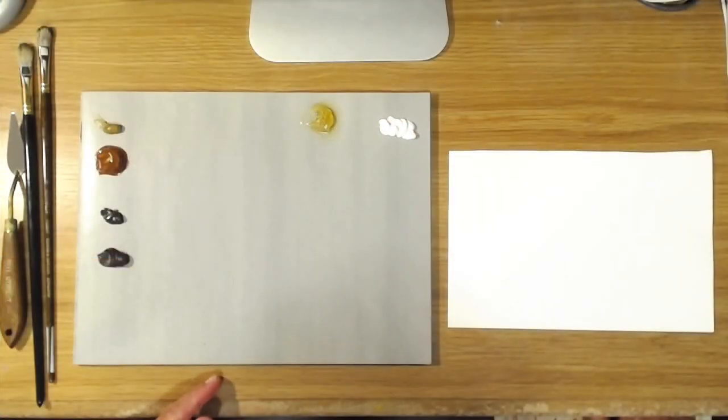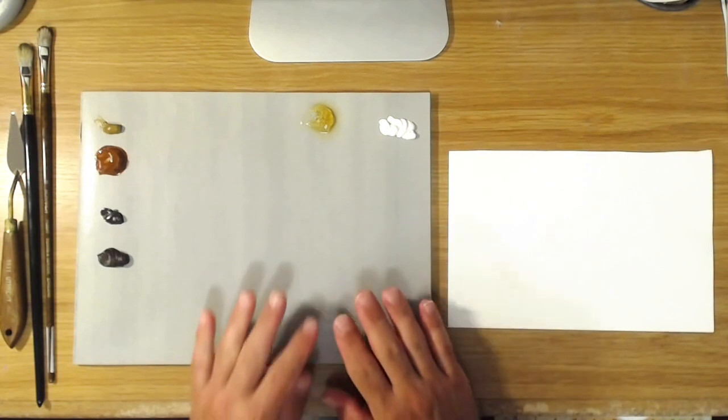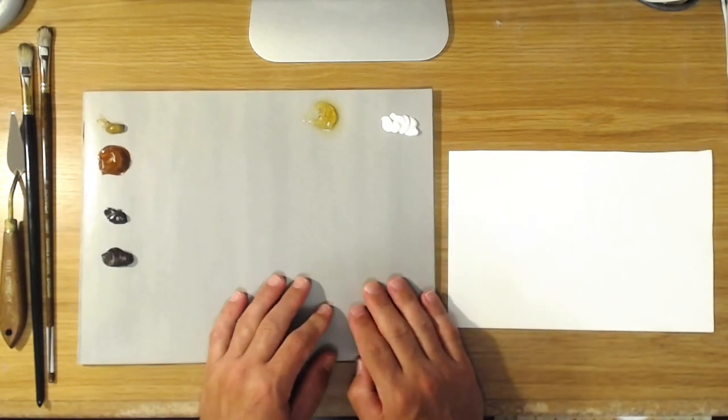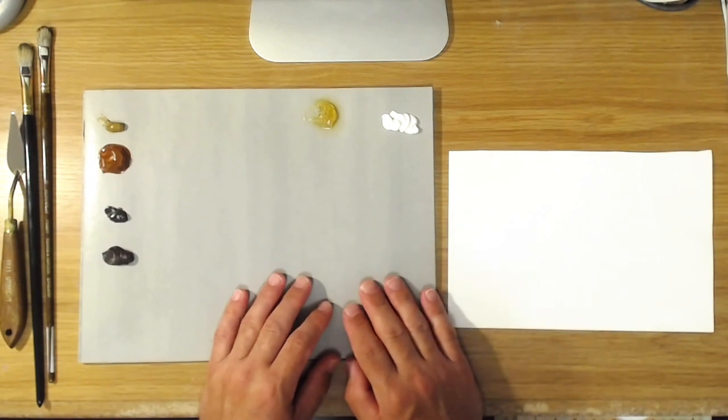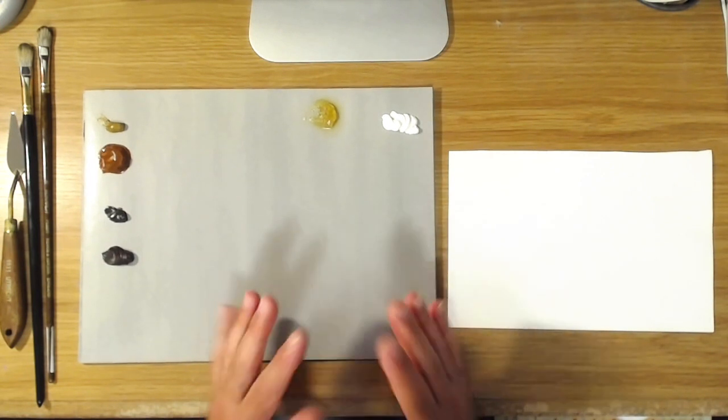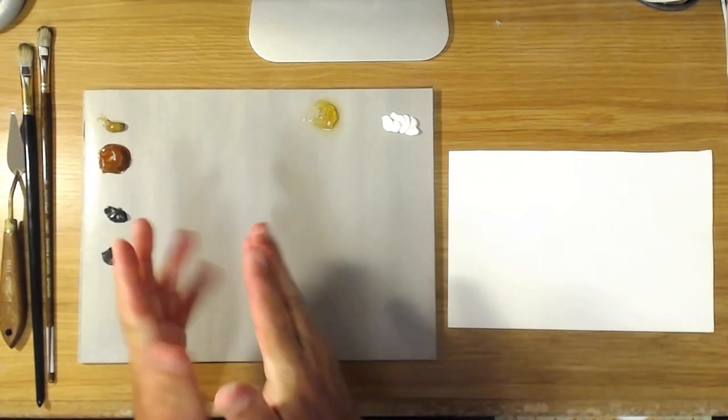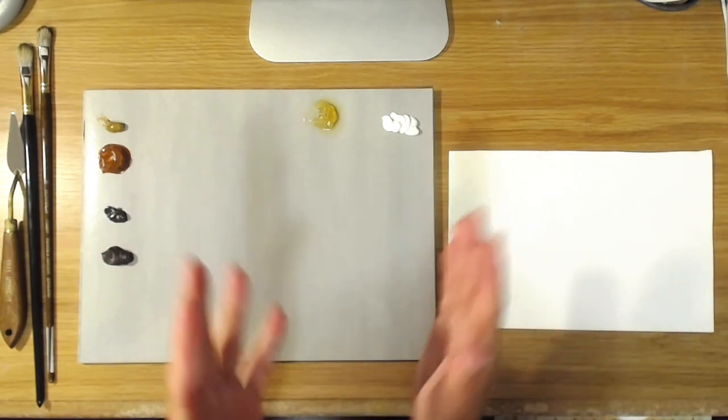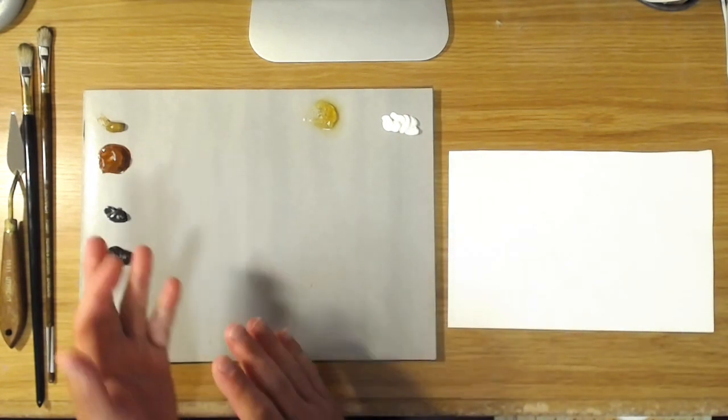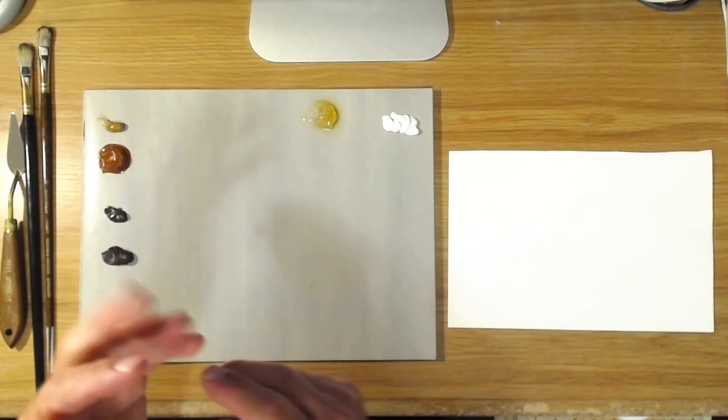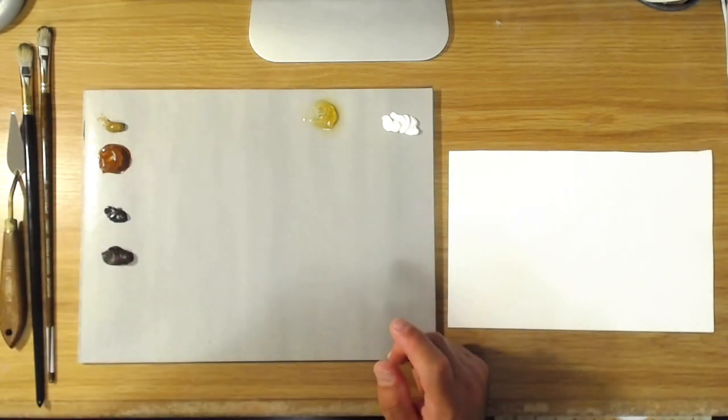Hello everyone and welcome back to my art channel. Today's video is in response to an inquiry I had from one of my viewers, and that person was asking about the difference between raw and burnt when you see that name in earth colors like raw sienna and burnt sienna and raw umber and burnt umber.